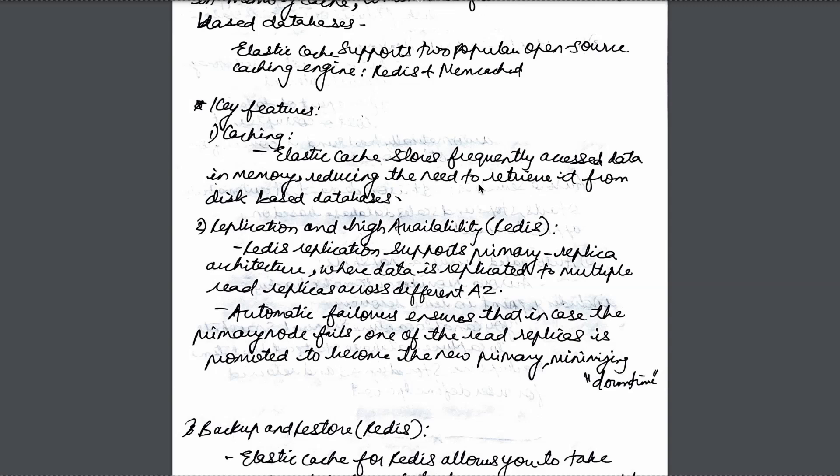The first feature is caching — ElastiCache stores frequently accessed in-memory data, which helps in reducing the retrieval rate from the database. The second feature is replication and high availability — it supports an architecture where data is replicated to multiple nodes.